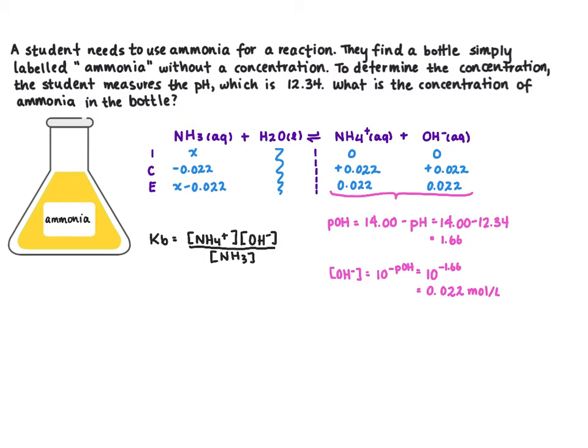We need to calculate Kb and we're going to do that using the Ka value for ammonium. So Kb is going to equal Kw over Ka. Kw is 1 times 10 to the negative 14 and Ka is 5.6 times 10 to the negative 10 for ammonium. And we get a Kb value of 1.8 times 10 to the negative 5.